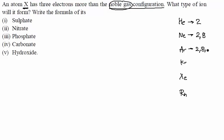Helium has two electrons, so its configuration is 2. Neon has ten electrons: two in the first shell and eight in the second shell, giving configuration 2,8. Argon has eighteen electrons: two in the first shell, eight in the second, and eight in the third shell, giving configuration 2,8,8.